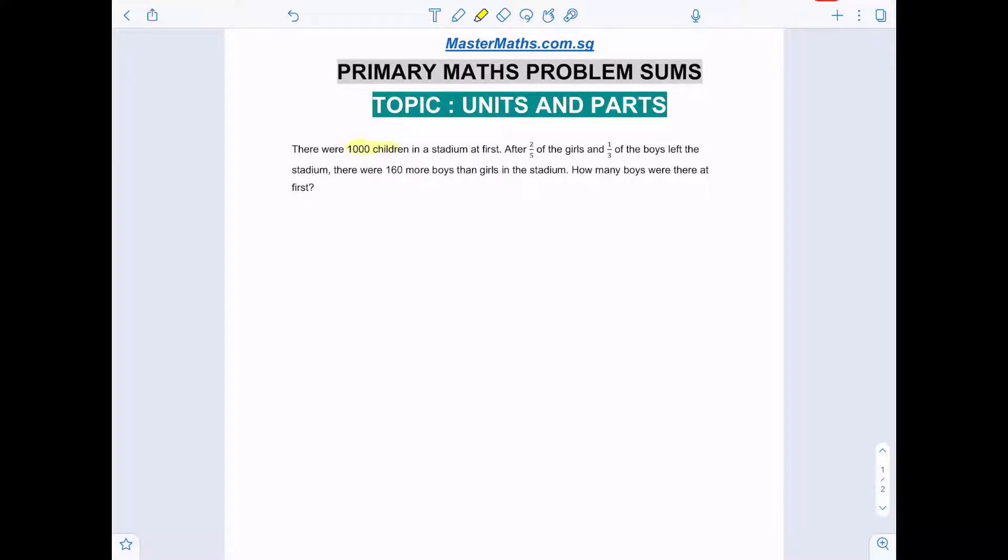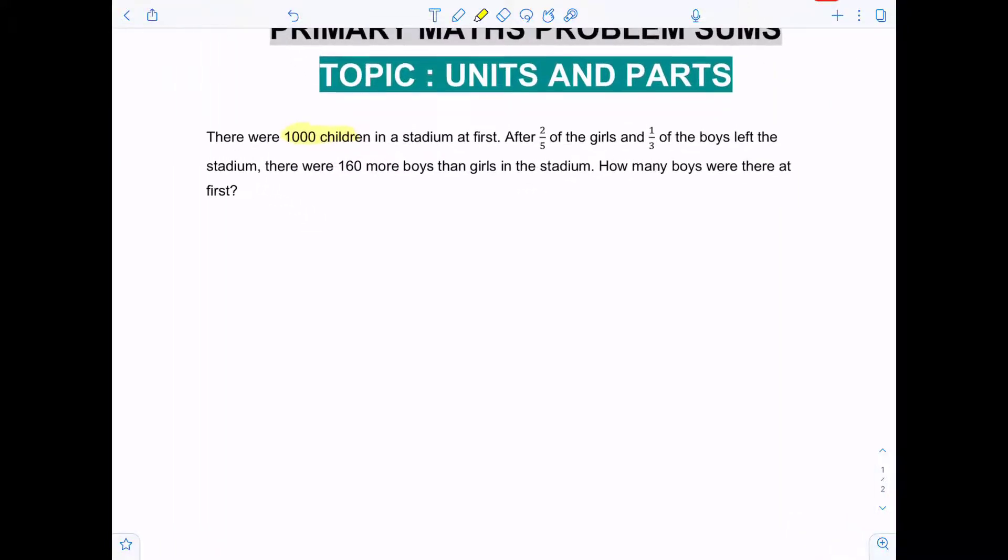There were 1,000 children in a stadium at first. After two-fifths of the girls and one-third of the boys left the stadium, there were 160 more boys than girls in the stadium. How many boys were there at first?